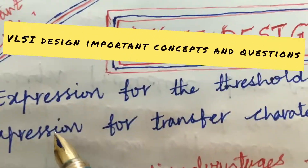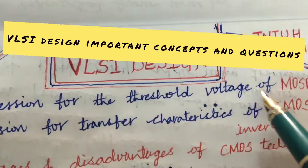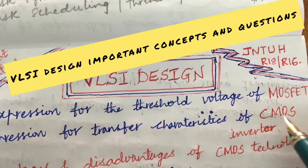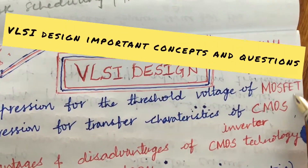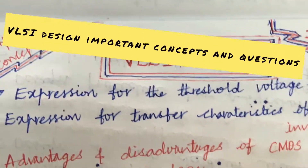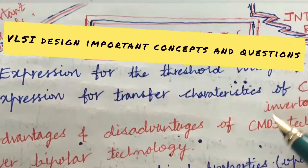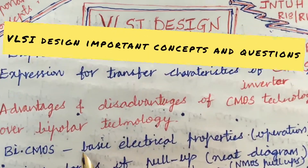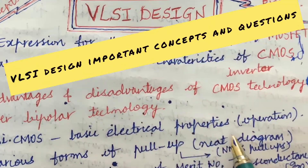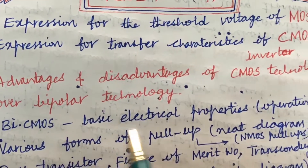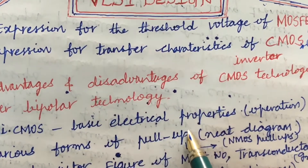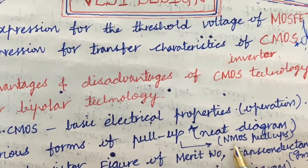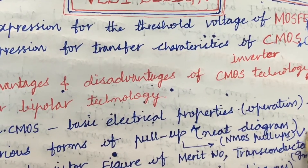The first and foremost important question is the expression for the threshold voltage of MOSFET as well as the expression for transfer characteristics of CMOS inverter — from these two concepts we can expect one question for sure. The advantages and disadvantages of CMOS technology over bipolar technology, basic electrical properties of CMOS along with its operation, and the various forms of pull-up including NMOS pull-ups with neat diagrams are also very important questions.